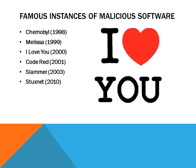There are many instances of famous malicious software in the world, including Chernobyl of 1998, Melissa of 1999, I Love You of 2000, Code Red of 2001, Slammer of 2003, and Stuxnet of 2010. The I Love You worm was a mass chain email with the subject line 'I Love You,' which would trick people into opening it, infecting their computer and automatically sending it to all of the person's contacts to continually spread.